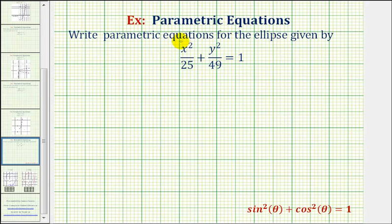While parametric equations are not unique, it will be helpful if we recognize that this equation here resembles the Pythagorean identity given below: sine squared theta plus cosine squared theta equals 1. Since 25 equals 5 squared and 49 equals 7 squared,